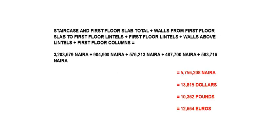The total cost of the first floor — when we add everything from the cost of the staircase to the columns on the first floor — is 5,756,208 Naira, approximately 13,815 dollars, 10,362 pounds or 12,664 euros.